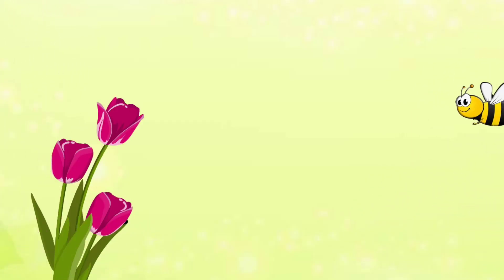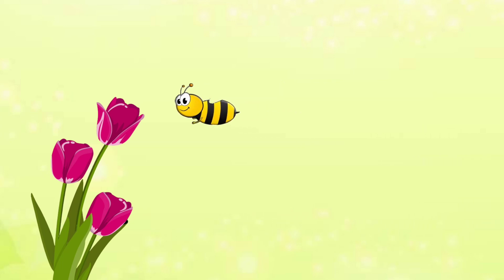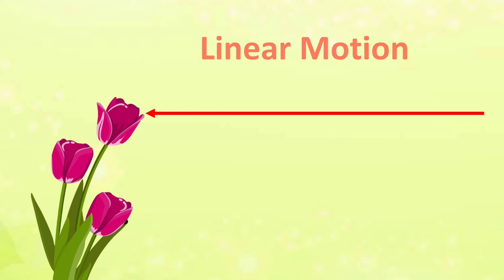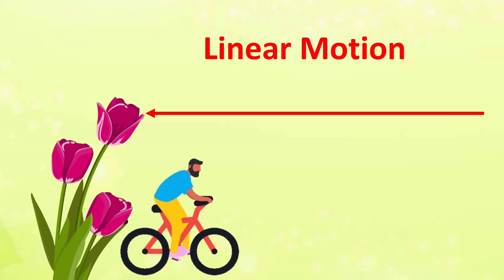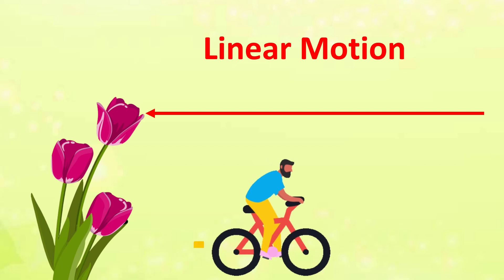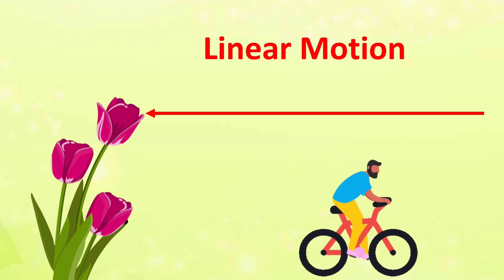Watch carefully how the bee is moving to suck the honey from the flower. It is moving in a straight line. This type of motion is known as linear motion. Let's see another example for linear motion — a person cycling on a straight path.